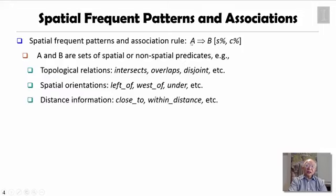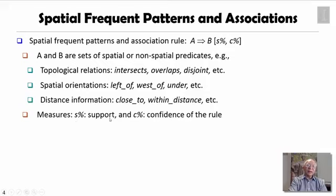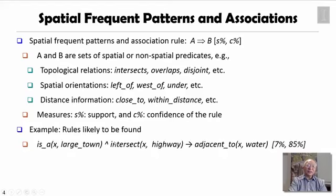In this context, A and B could be sets of spatial or non-spatial predicates. The spatial predicates may indicate topological relations or spatial orientations or distance information, like close to within certain distance. And the measures support and confidence are very similar to the general ones.